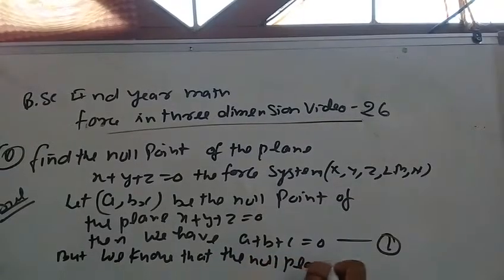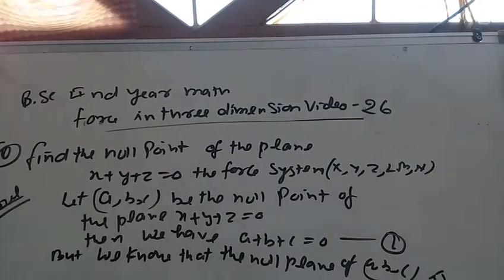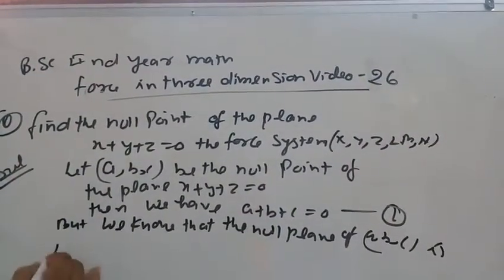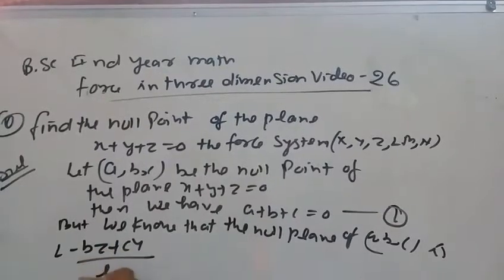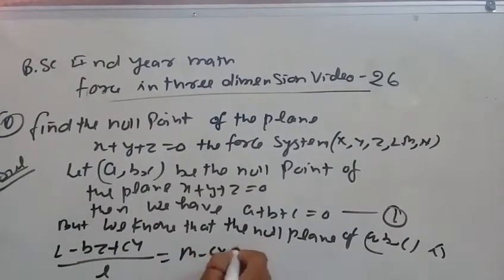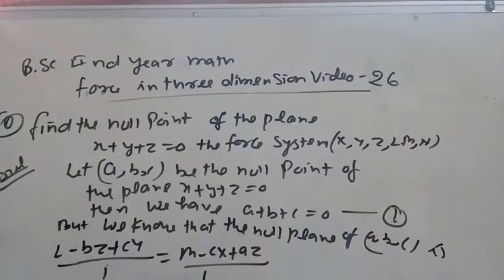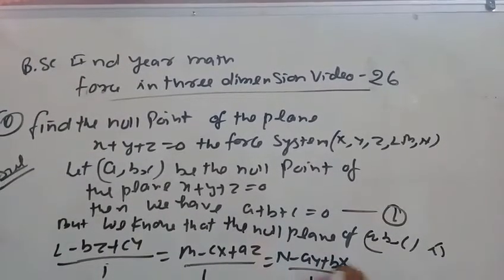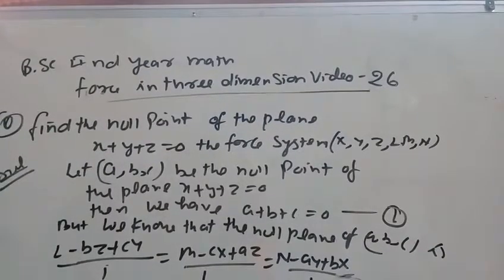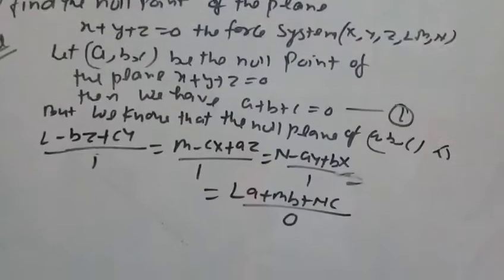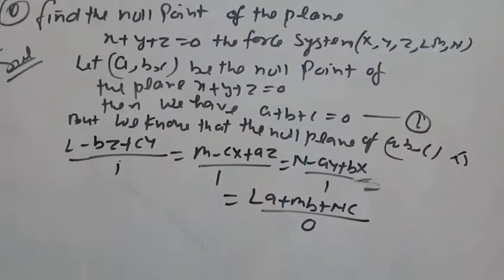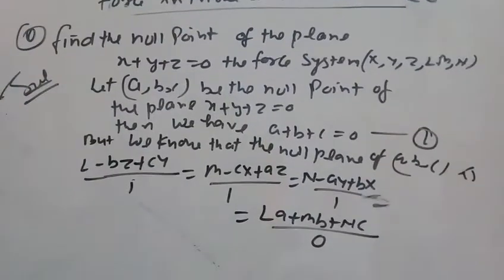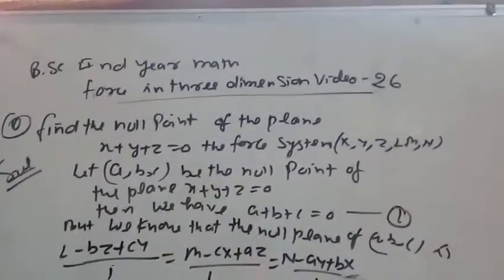We know that the null plane of point (a, b, c) — the equation of null plane — is: (l minus bz plus cy) upon l equal to (m minus cx plus az) upon 1, equal to (n minus ay plus bx) upon 1, equal to (la plus mb plus nc) upon 0.